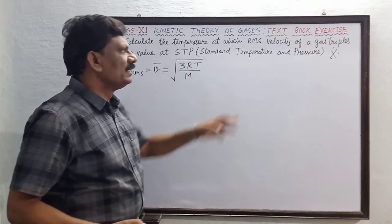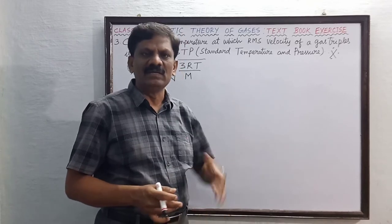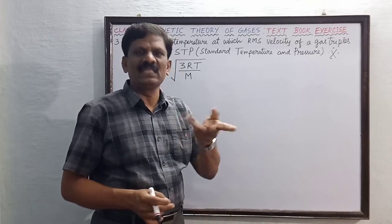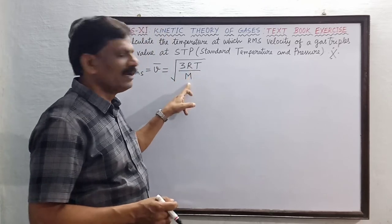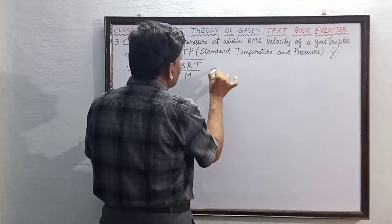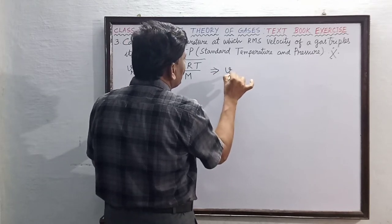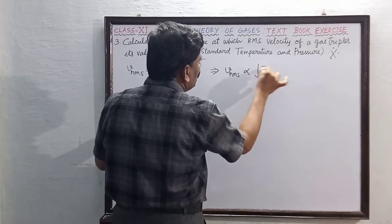For the same gas, when rms velocity changes, only temperature changes while other constants remain the same. This implies v_rms is proportional to the square root of T. This is the main expression.